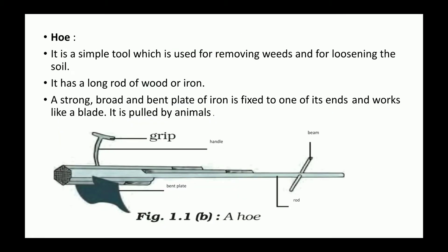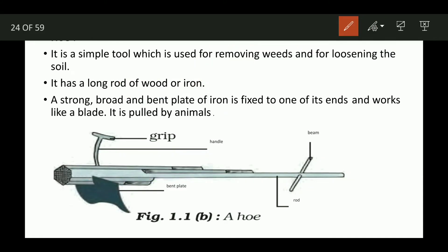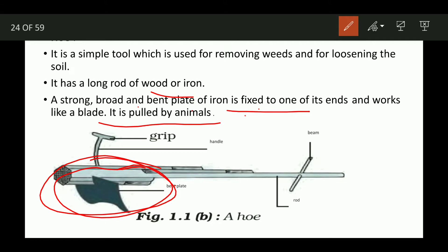The hoe is a simple tool used for removing weeds and for loosening the soil. It has a long rod of wood or iron, and a strong broad bent plate of iron is fixed to one end, working like a blade. It is pulled by an animal. There is a grip on the handle, and a beam attaches it to the animal's neck.